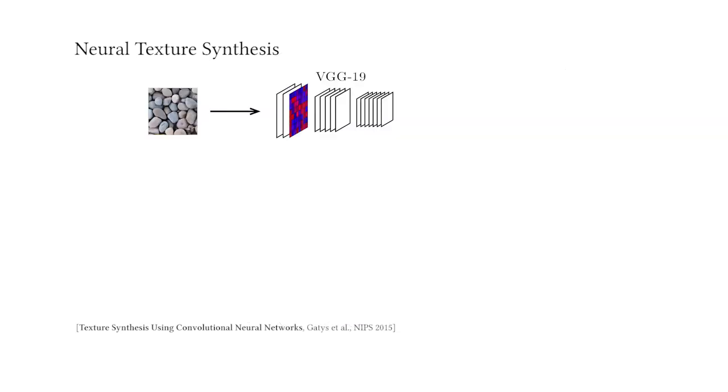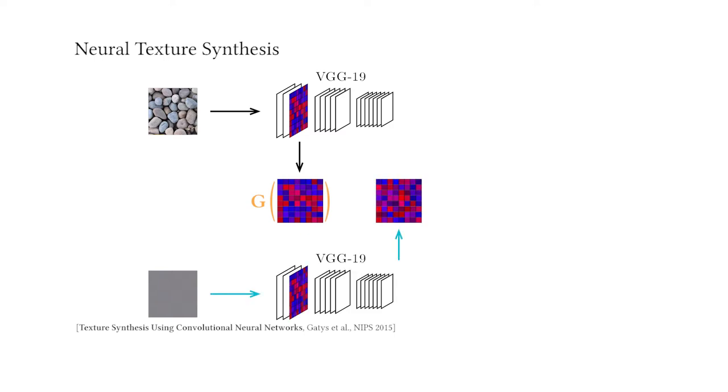Indeed, Gatys and colleagues discovered that the feature activations in a pre-trained convolutional neural network yield powerful statistics. They propose to capture the gram matrix of feature activations, which measure the correlation between feature channels. This can for example be used to optimize a new texture with similar correlation statistics.